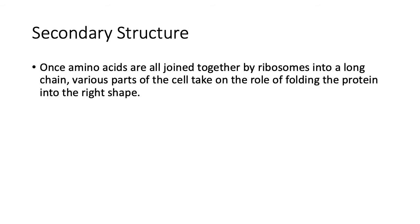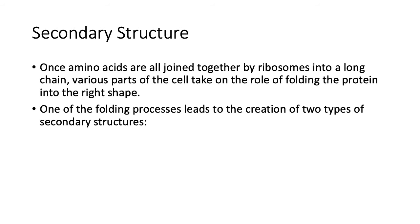Once amino acids are all joined together by ribosomes in a long chain, various parts of a cell take on the role of folding the protein into the right shape. Part of that folding leads to the creation of two types of secondary structures: alpha helices and beta pleated sheets.